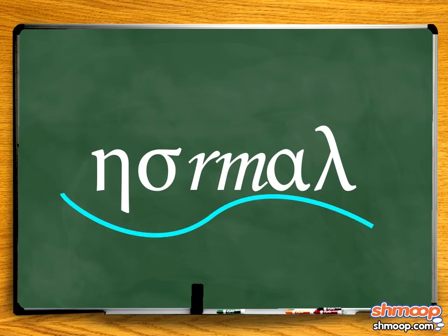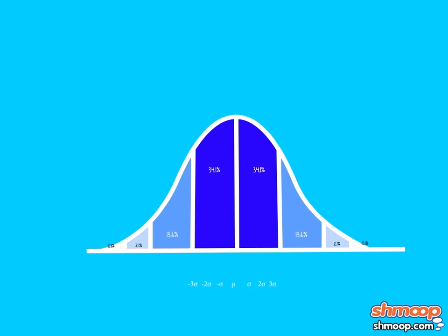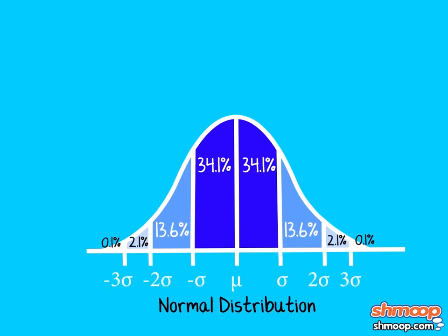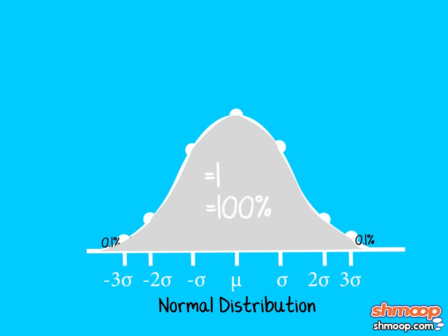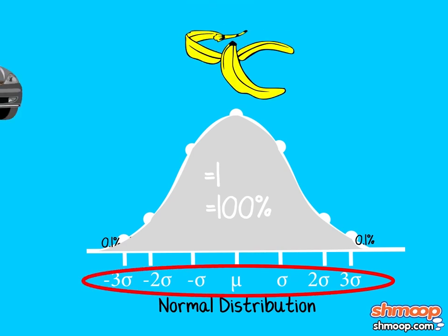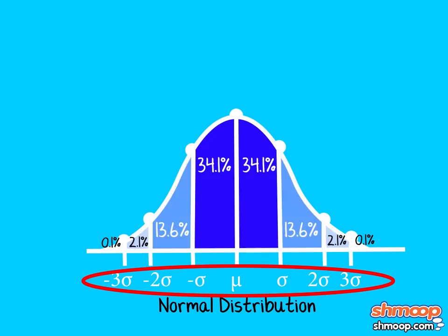The normal curve looks like this. It's the bell-shaped graph that results when statisticians plot data with a normal distribution. That's the outline of dots around these lines. Basically, the total area under the curve equals 1, or 100%. This area is divided into standard deviations — that is, into the areas to the left and right of the middle of the curve, which also happens to be the average of the data.